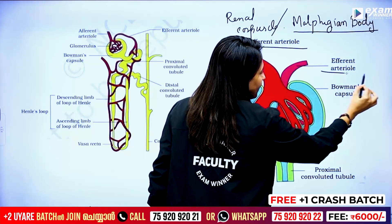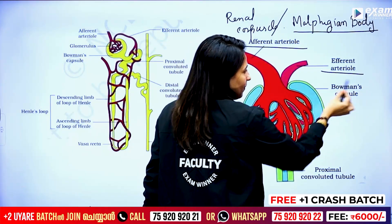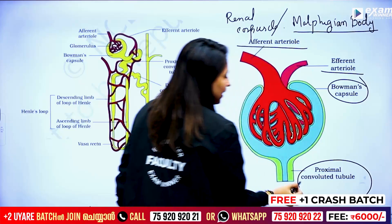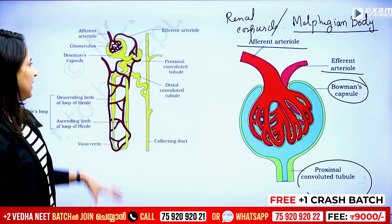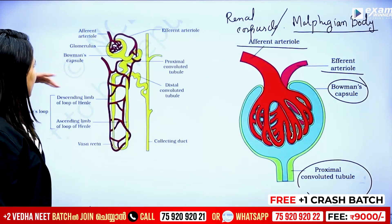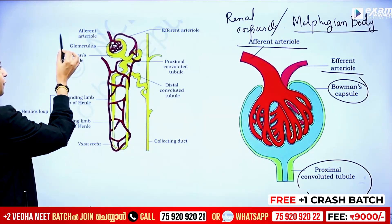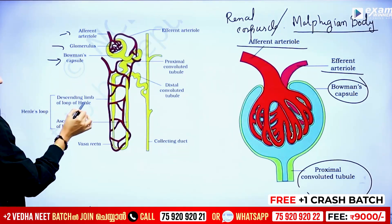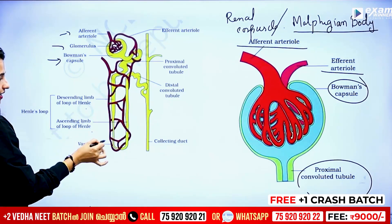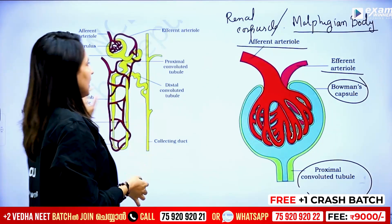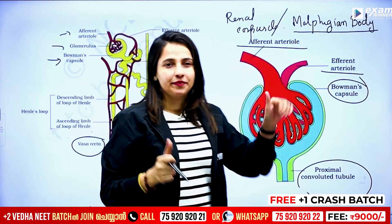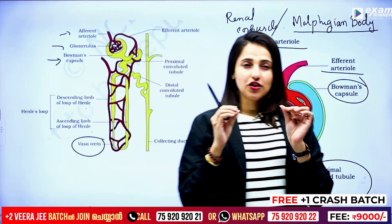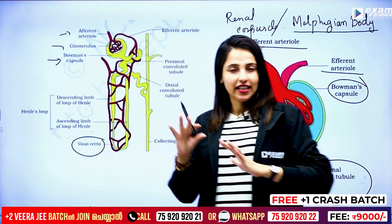This is the efferent vessel and efferent arteriole. Bowman's capsule, then proximal convoluted tubule. Efferent glomerulus and Bowman's capsule, descending and ascending loop of Henle, renal corpuscle.